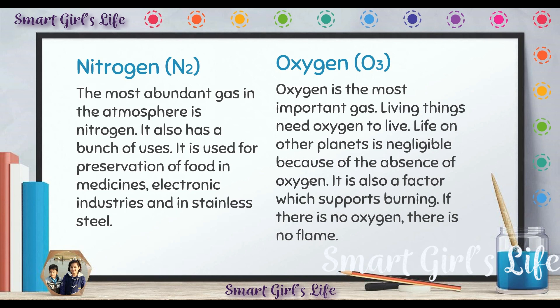Living things need oxygen to live — we can't live without oxygen. Plants give us oxygen. We can only live on Earth because there is oxygen on Earth. On other planets there is no oxygen, and that is why we cannot live on other planets like Mars, Jupiter, and Saturn. Also, oxygen supports burning — if there is no oxygen, there is no fire.